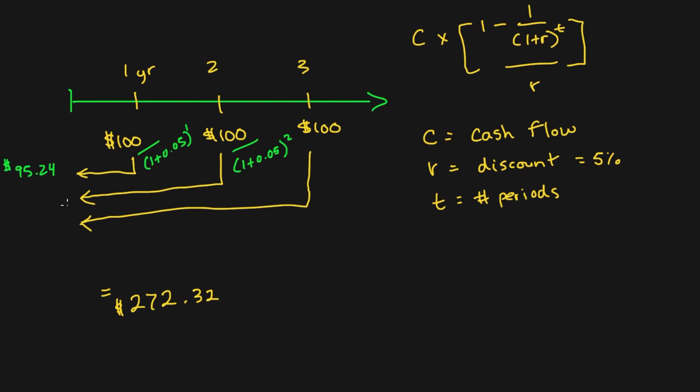And the third year would be divided by 1 plus 0.05 but to the power of three years, and that would be $86.38. And you'll see that if you add all that up, it'll come straight back to the answer that we got from using the annuity formula.